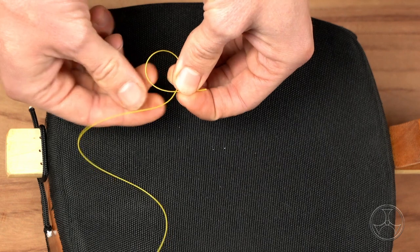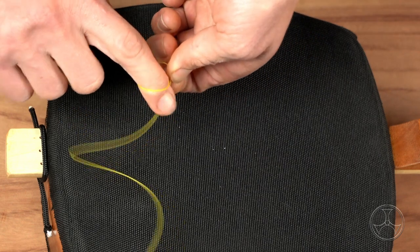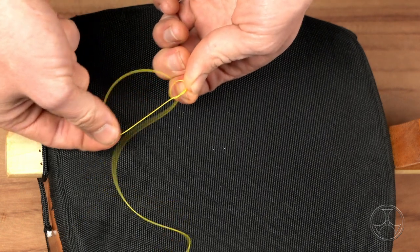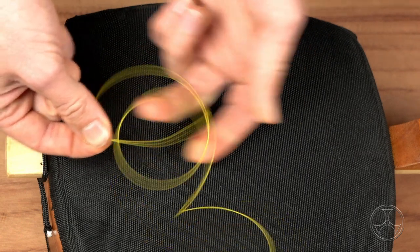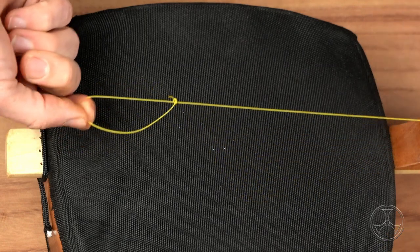Then pinch a little bit and feed the long end through the loop in the middle. And pull. And then we've got our loop here, and then we pull the long end to tighten.